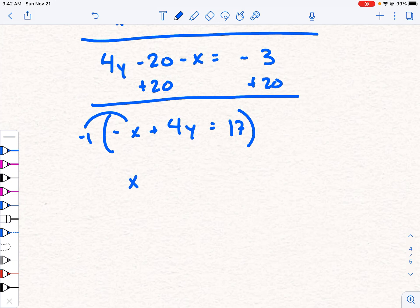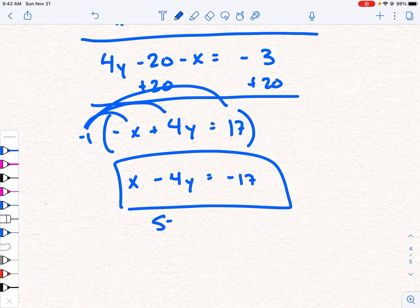Negative 1 times negative x will be positive x. Negative 1 times positive 4y will be minus 4y. And negative 1 times 17 will be negative 17. And now we have what's considered standard form.